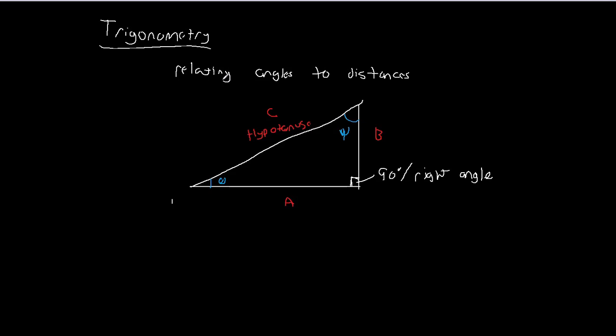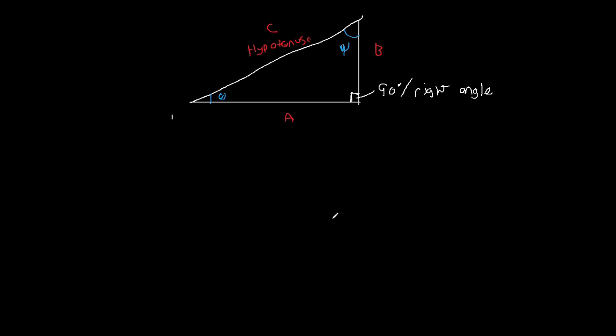And so what trigonometry tries to do is it tries to say, can we build relationships given the fact that this is 90 degrees, these two angles, and these three sides? Can we build relationships? And well, the answer to that is absolutely we can.